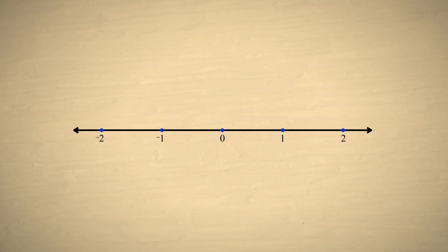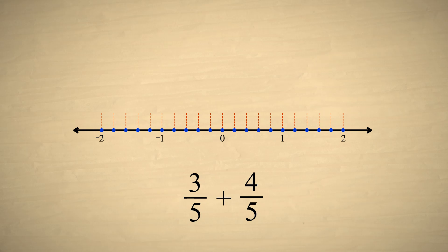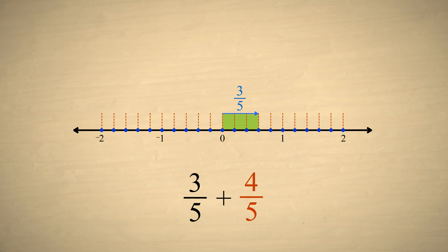For example, if we add the fractions three-fifths and four-fifths, we use five subdivisions per unit length, since these fractions both have denominators of five. Each subdivision is one-fifth of a unit. The fraction three-fifths represents three of these subdivisions, and four-fifths represents four subdivisions. Therefore, the total length adds up to seven subdivisions, or seven-fifths.